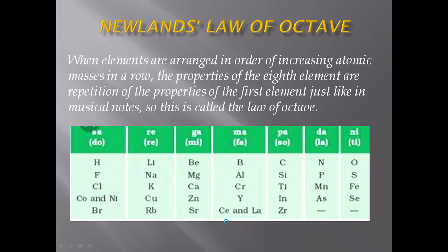Newland assumed there are only 56 elements in nature and that no new element would be discovered in the future. He could not think about heavier elements that might be found later.